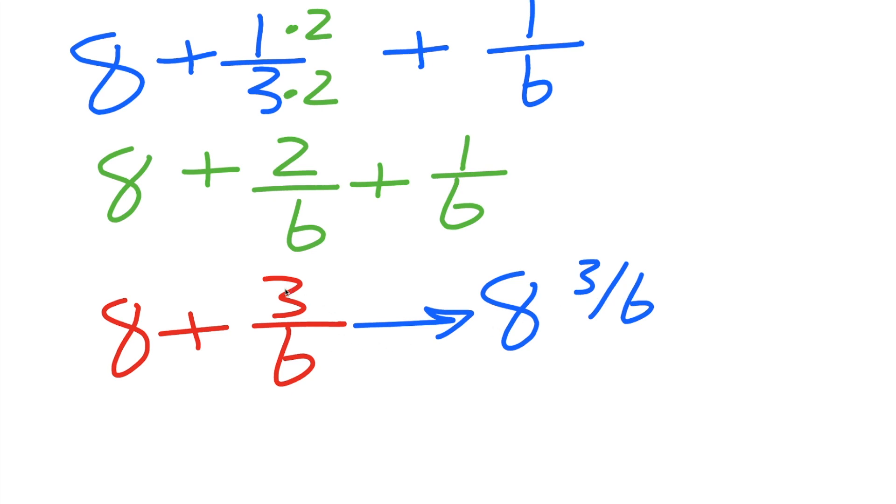But we could also simplify. And so what we could do is divide this piece by 3, and divide this by 3, and both pieces will be a whole number. So let's do that also. So we have 8, so 3 divided by 3 is 1, and 6 divided by 3 is 2. So 8 and 1/2 would be our final answer.